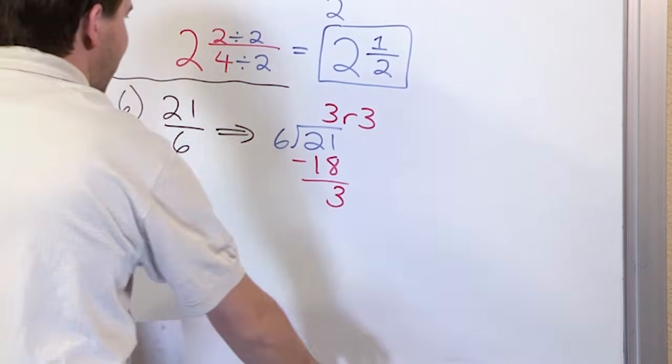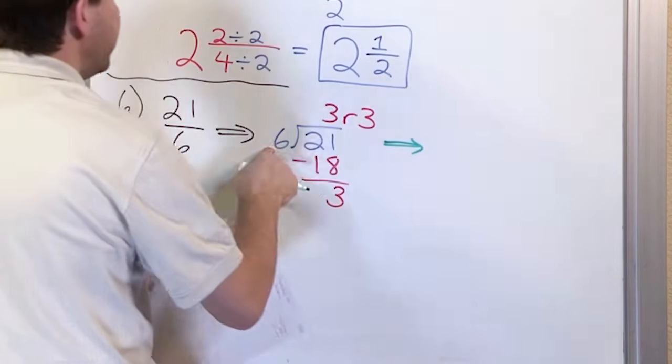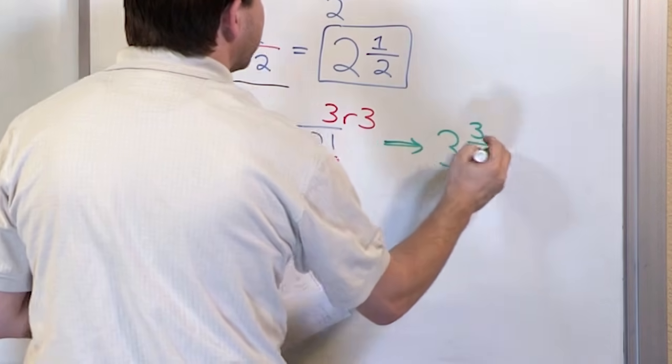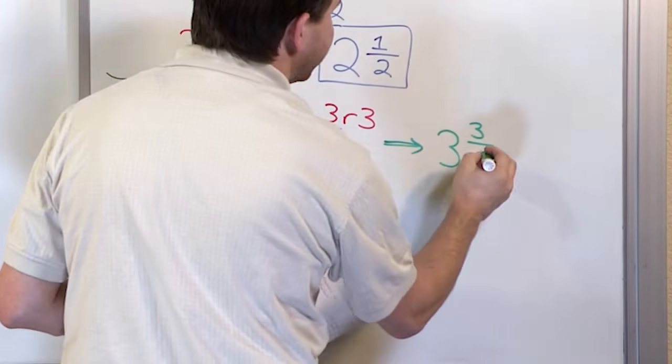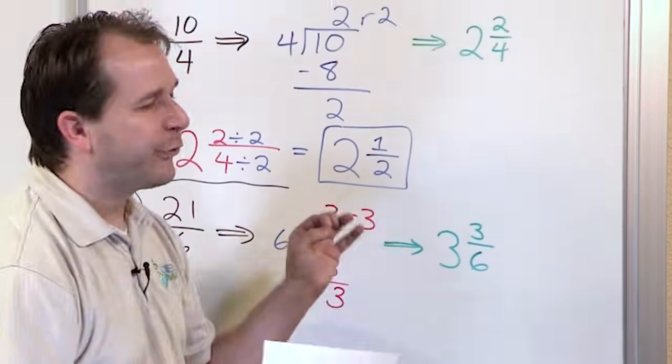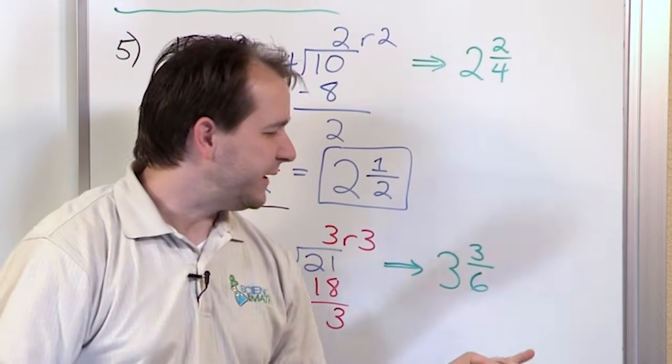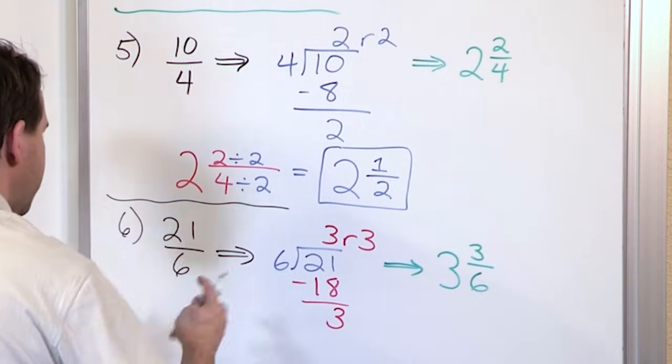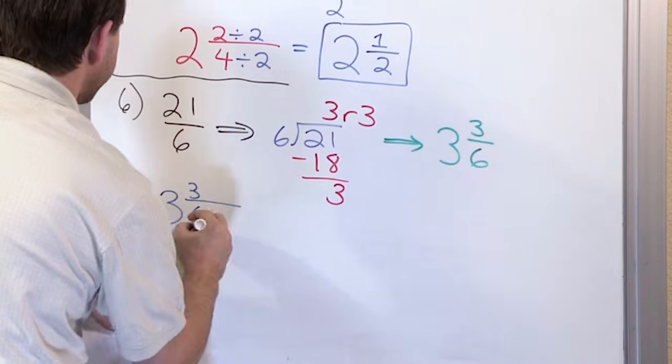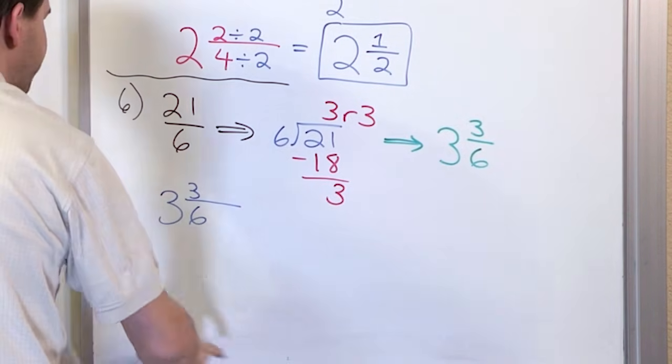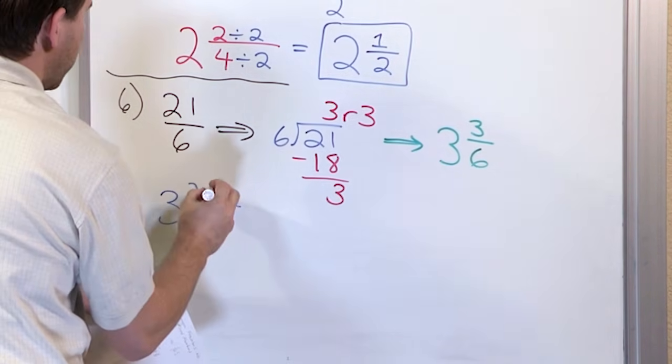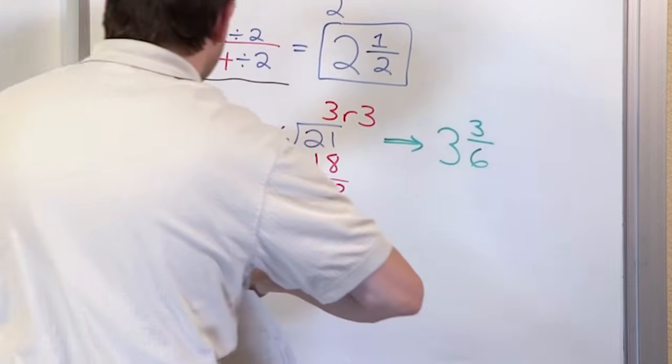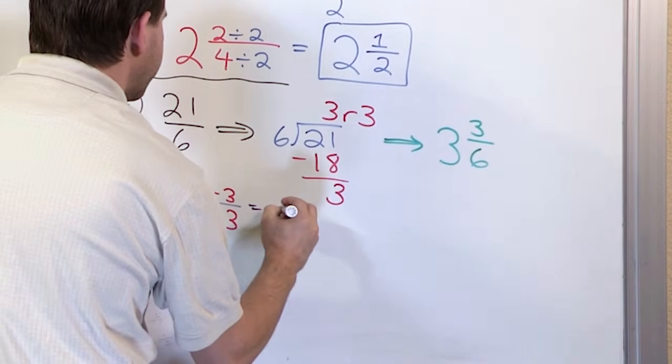Then what I'm going to have at the end of the day: this division goes 3 whole times with a remainder of 3 left over out of the original denominator, which is 6. 3 and 3 sixths—that's correct. But can you simplify this further? The answer is yes. If I say 3 and 3 sixths, I can divide the top by 3 and the bottom by 3.